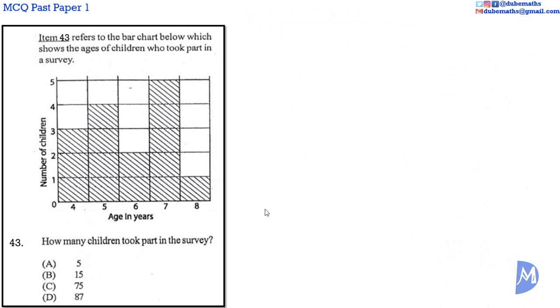Question 43. To determine the number of children who took part in the survey, we sum the number of children for each age. There were 3 children each 4, 4 children each 5, 2 children each 6, 5 children each 7, and 1 child each 8.